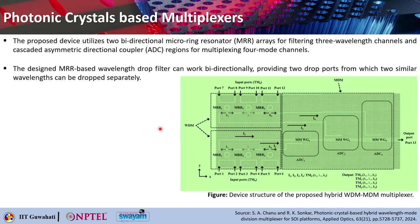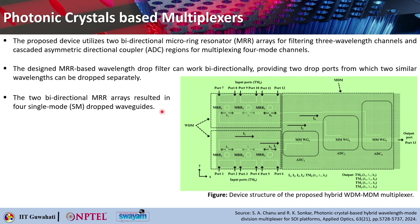The two bidirectional MRR arrays will result in four single mode dropped waveguides. The ports are numbered: port 1, port 2, port 3, port 4, port 5, port 6, port 7, port 8, port 9, port 10, port 11, port 12, and the final output comes from port 13. The first part gives you wavelength division multiplexing. These waveguides are combined into a bus waveguide, with asymmetric directional couplers of different widths, separated by adiabatic taper regions. There are three sections of different width: asymmetric directional coupler ADC 1, ADC 2, and ADC 3.